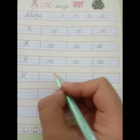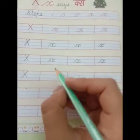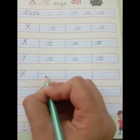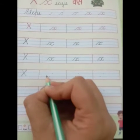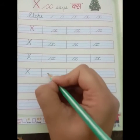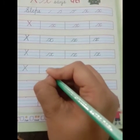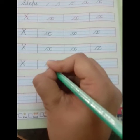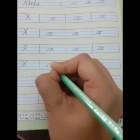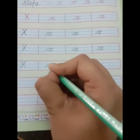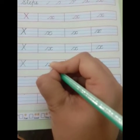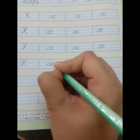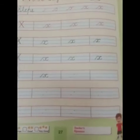And now we will write small letter X. Firstly we will start with third line in small cursive. We always start with third line. So I am going to start from third line. We will go till second line in a slanting way, then take a curve like this. We will come till third line. Then again we will go till second line and make a C like this.